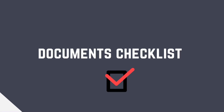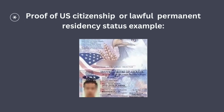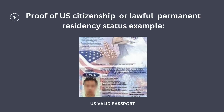Document checklist — proof of US citizenship. Examples include: birth certificate, copy of naturalization certificate, a copy of Form FS-240 or CRBA, a copy of a valid US passport, or proof from the US consular office that you are a citizen with a valid passport.